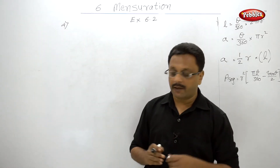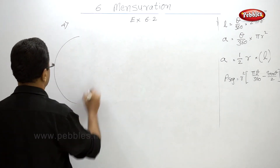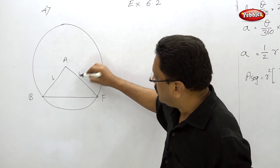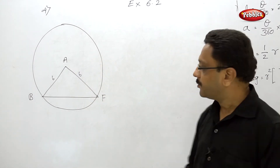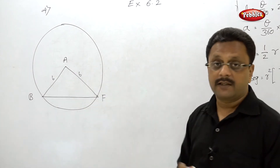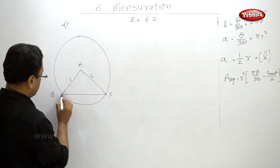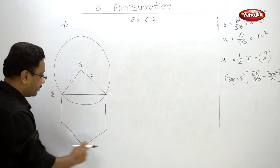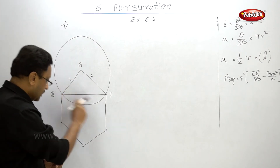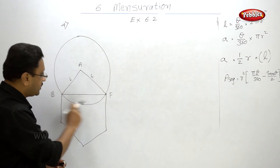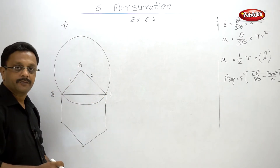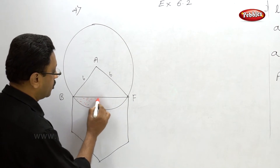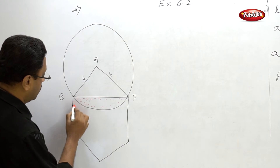Let us draw the figure first. There is one circle with center A and radius 6. They have taken two sides as the sides of a regular hexagon. So we have a regular hexagon, a sector, a segment, and a triangle. They have shaded a specific area — I am drawing it with a different pen — and this is the completely shaded area.